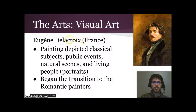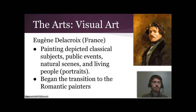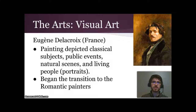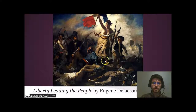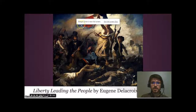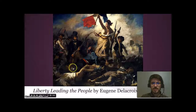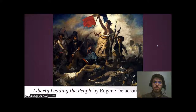In visual arts, Eugène Delacroix was from France. He painted classical subjects like Roman and Greek gods, but also public events, natural scenes, and everyday people — extending what the Renaissance had done. He also began the transition to Romantic painting. One of his most famous works is Liberty Leading the People, a depiction of the French Revolution featuring a woman carrying a French flag. The use of light to focus emotion in particular areas was central to this Romantic style.